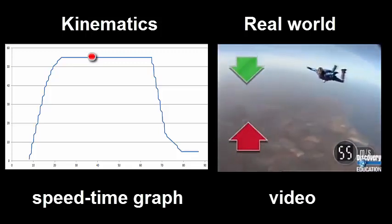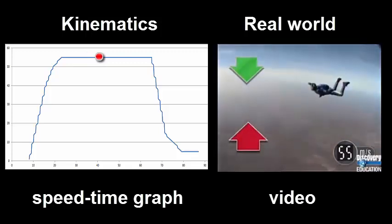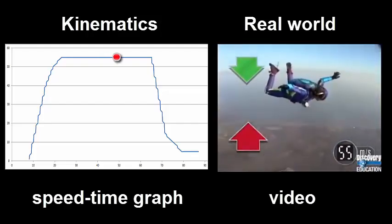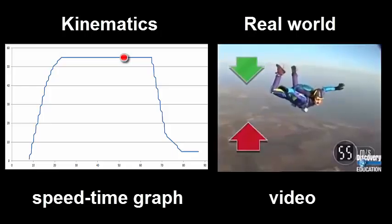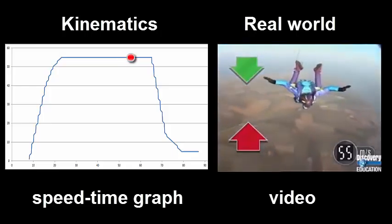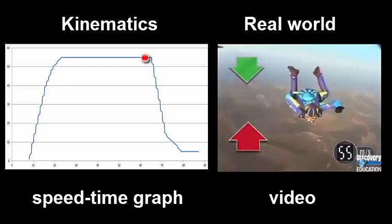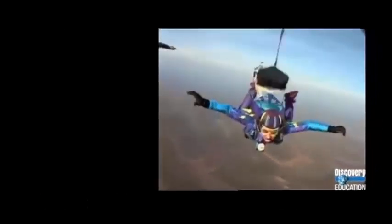When forces are balanced, the speed remains constant. That doesn't mean she stopped falling; it means she stopped accelerating. She's still doing a steady 55 meters per second, and hitting the ground at this speed isn't a good idea.